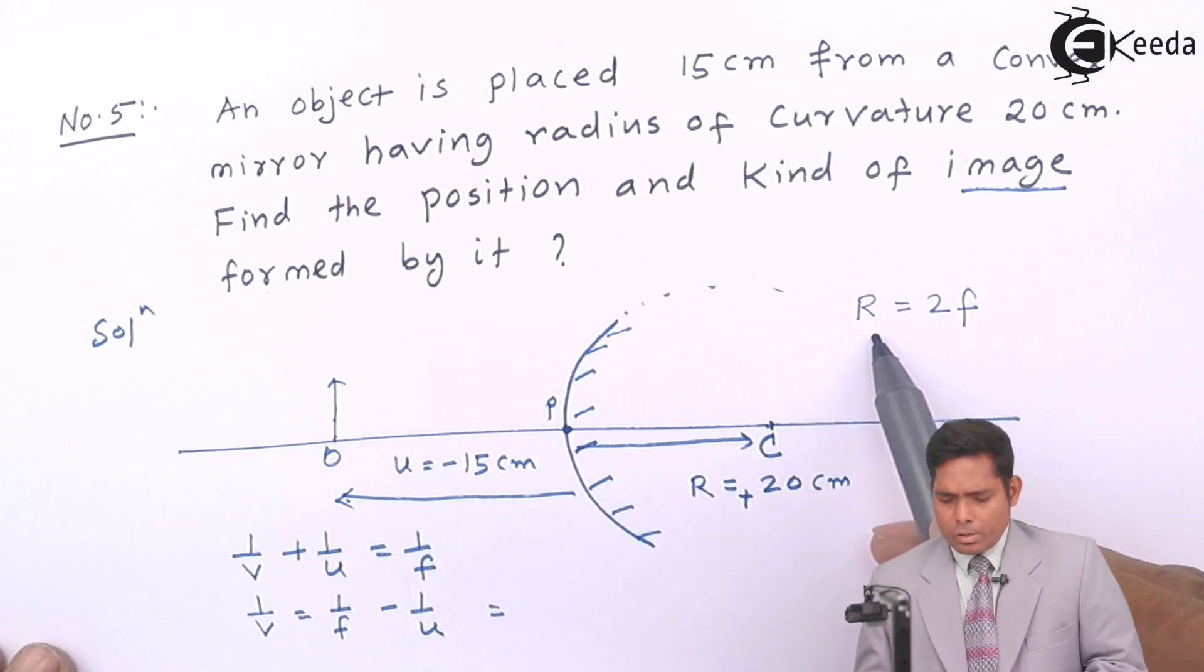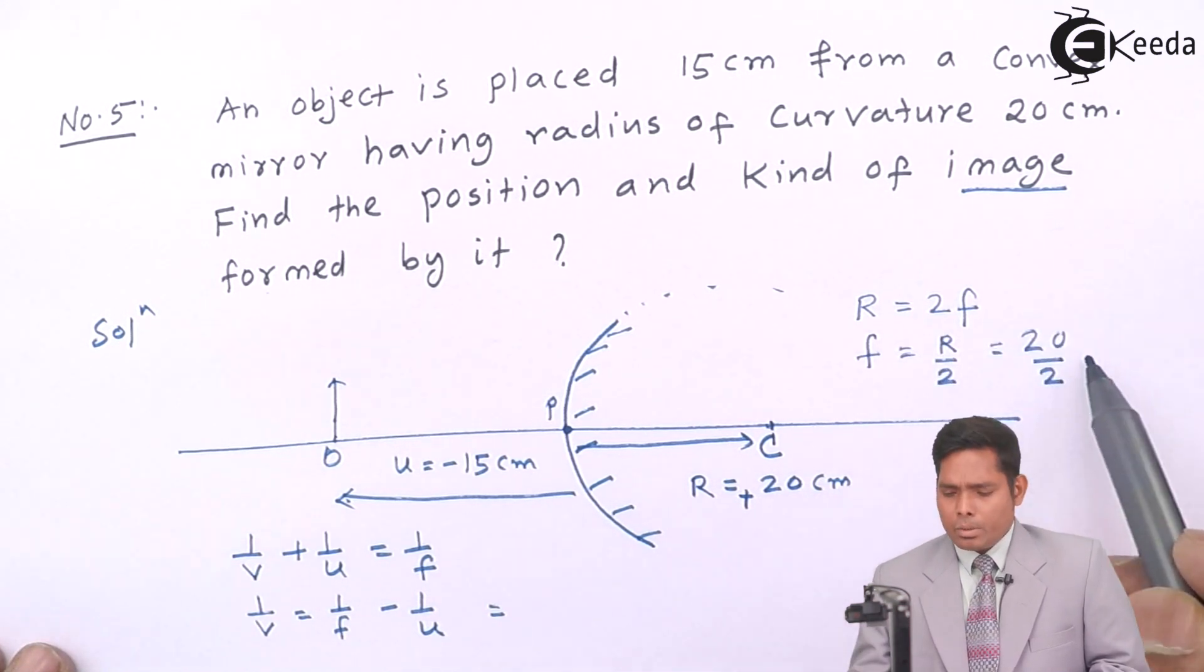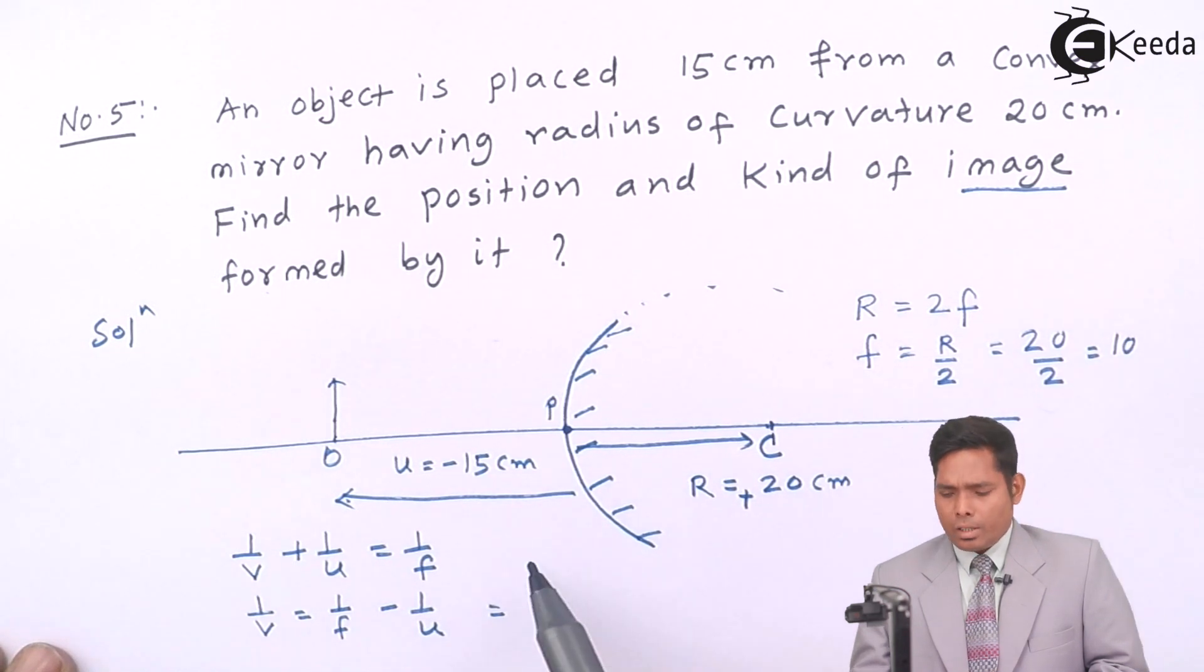If I substitute the value of f - but f is not given, R is given. For a mirror, the relation between R and f is R = 2f. Therefore, focal length f = R/2 = 20/2 = 10.